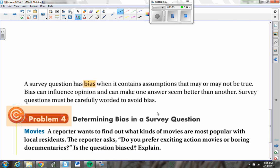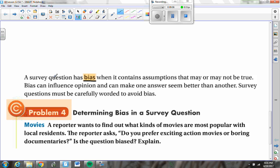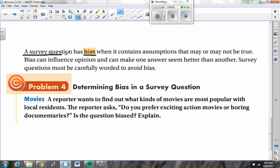Bias a lot of times shows up in survey questions, the questions that you are asking people. And a survey question has bias when it contains assumptions that may or may not be true or when it influences opinions and can make one answer seem better than another. Survey questions have to be very carefully worded to avoid bias. Here's a very egregious example. A reporter wants to find out what kind of movies are most popular with local residents. The reporter asks this survey question to a random sample of people. Do you prefer exciting action movies or boring documentaries? And then they ask, is this question biased?